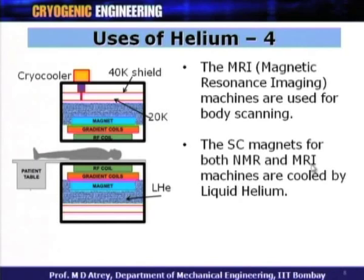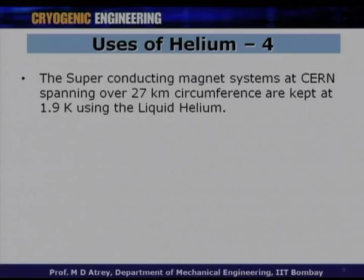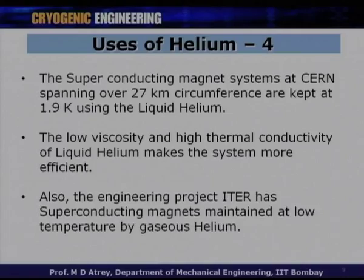The superconducting magnet system at CERN where the Large Hadron Collider experiments are conducted spans over 27 km in circumference. The magnets are kept at around 1.8 to 1.9 Kelvin using superfluid helium, that is Helium II. Its high thermal conductivity gives the best heat transfer, cooling the magnets most effectively. The engineering project ITER, a nuclear fusion project, also has superconducting magnets maintained at low temperature using low-temperature gaseous helium.